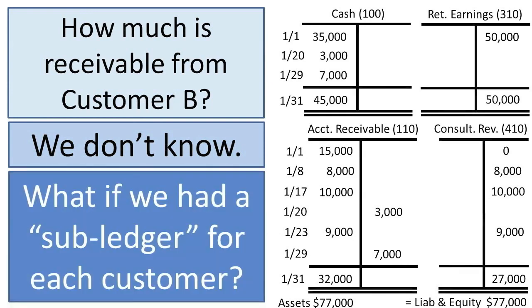But what if we had a sub-ledger for each customer, the total of which were $32,000? Wouldn't that be a little more helpful? That way we could track the balance receivable from each individual customer. Let's look at it.